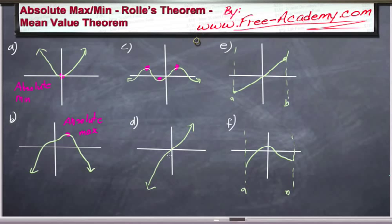We're not restricted to defining things from negative infinity to infinity — we can define things from A to B. Here we have f(x) = x, and while there is no extremum on the open interval, we do have a minimum and an absolute maximum occurring at the endpoints of the interval. Graph F shows a case where we have a minimum occurring at the interval endpoint, but a maximum that doesn't occur at the endpoint — making it a maximum extremum, and a simple minimum.